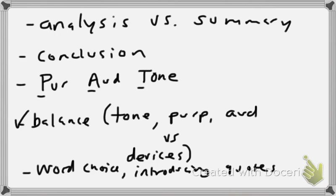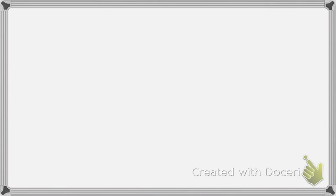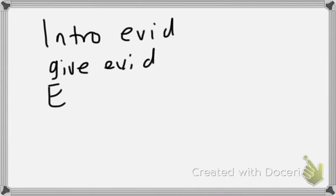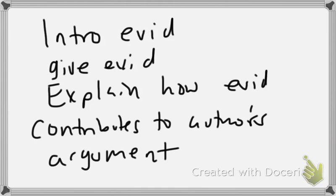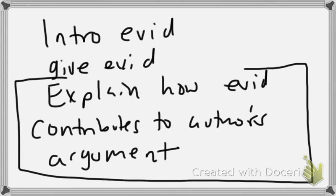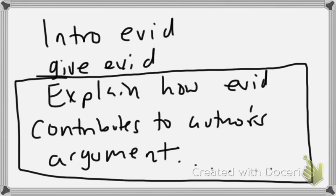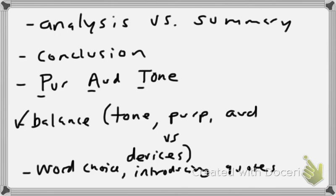So to jump from summary to analysis, basically it's answering that question. So you intro your evidence, you give the evidence, and then you explain how the evidence contributes to the author's argument. Okay, so you can't possibly be summarizing if you do this, because if you didn't know anything about analyzing argument you couldn't do that part. You would just read the passage and say, well this is what the passage says, but you wouldn't actually know, you wouldn't be able to analyze it. Remember, to analyze is to explain how something works.